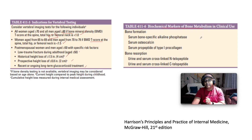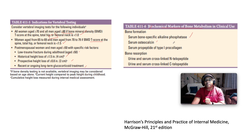Biochemical markers of bone metabolism in clinical use: bone formation markers include serum bone-specific alkaline phosphatase, serum osteocalcin, and serum pro-peptide of type 1 pro-collagen. Bone resorption markers include urine and serum cross-linked N-telopeptide and C-telopeptide.